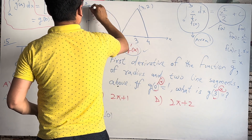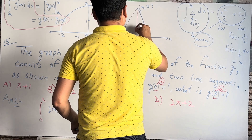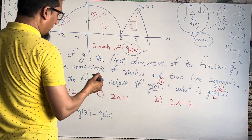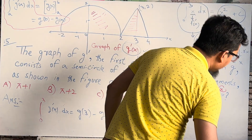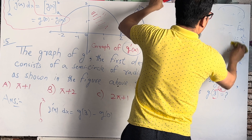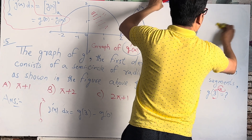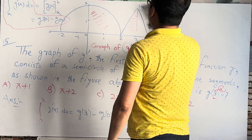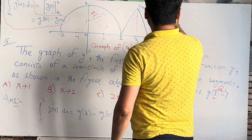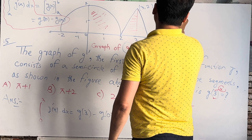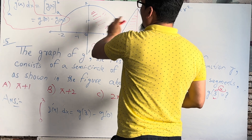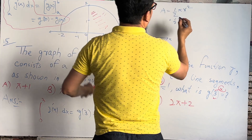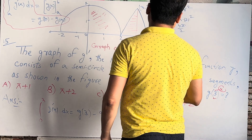From 0 to 3, we need the area which consists of half of the semicircle and half of the triangle. The formula for a semicircle area is A = π r² divided by 2. The radius here is 2, so the area of the full semicircle is π times 2 squared divided by 2, which equals 4π over 2, which is 2π.